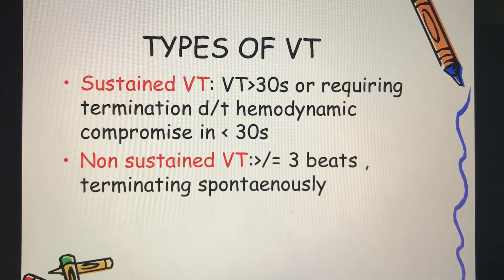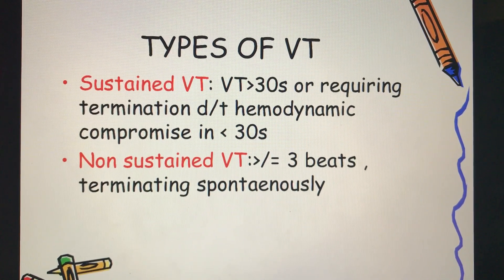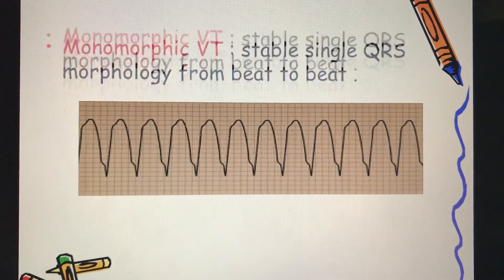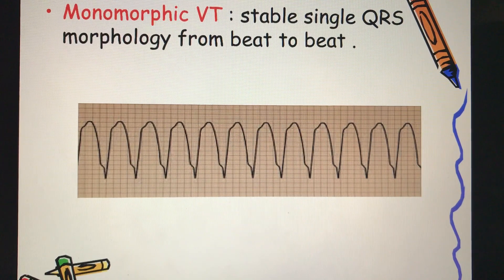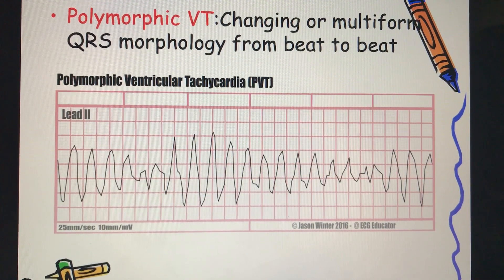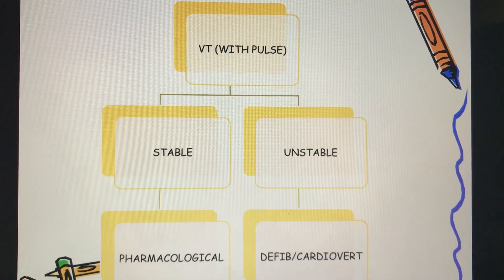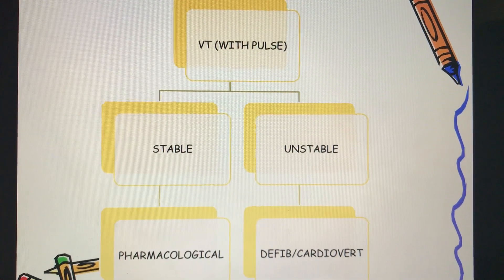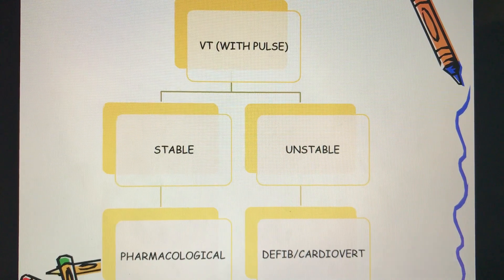Non-sustained VT lasts less than 30 seconds or terminates spontaneously. VT can also be classified as monomorphic VT, which has a stable single QRS morphology from beat to beat, or polymorphic VT, which has a changing or multiform QRS morphology from beat to beat.